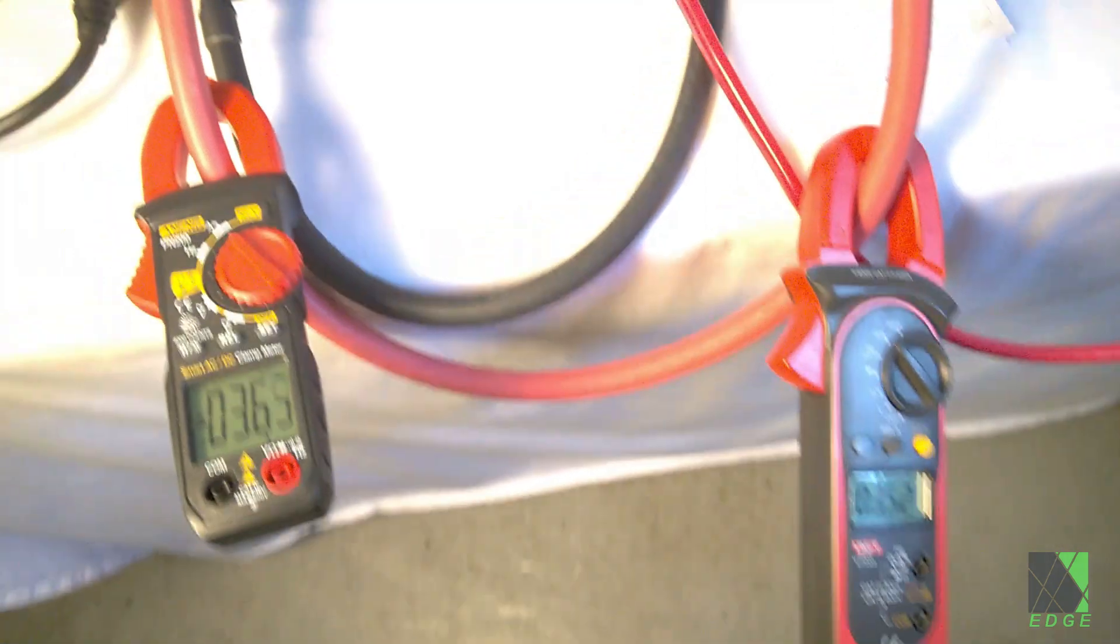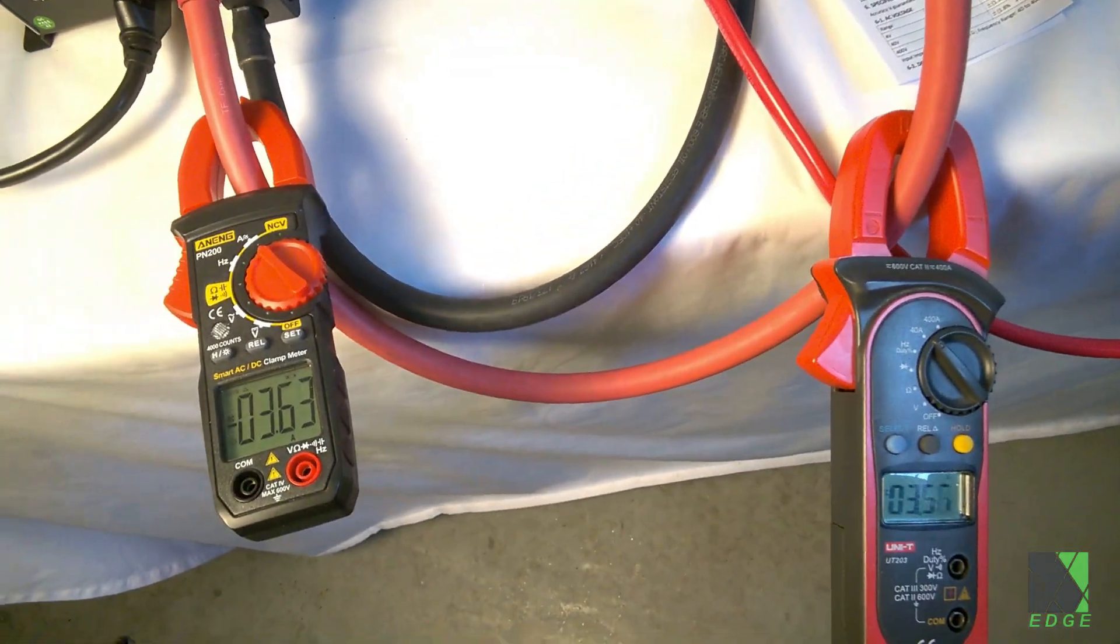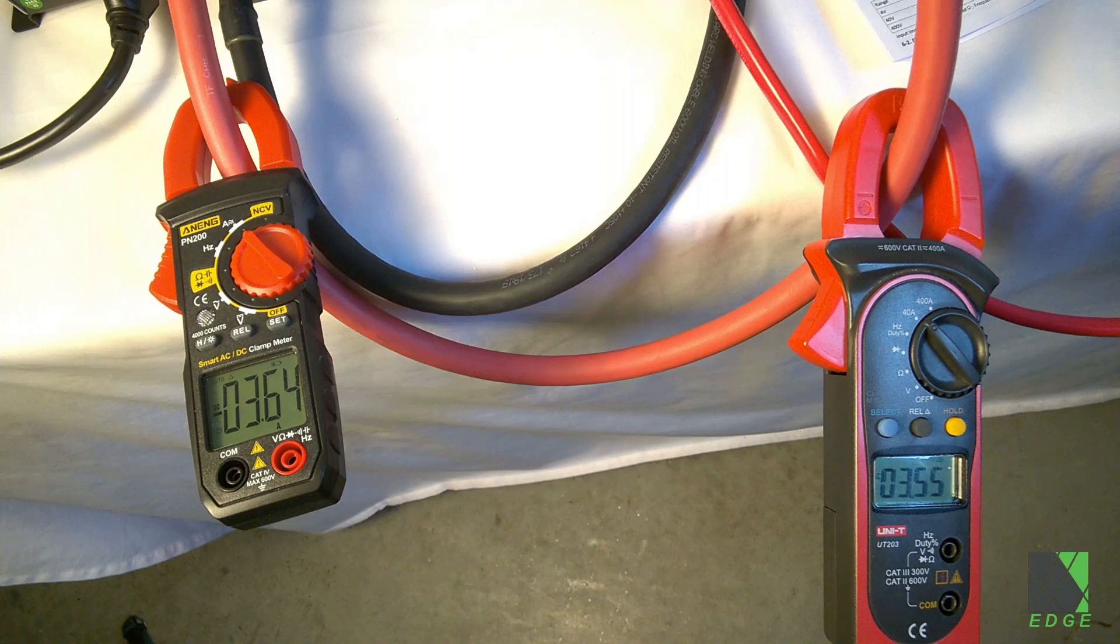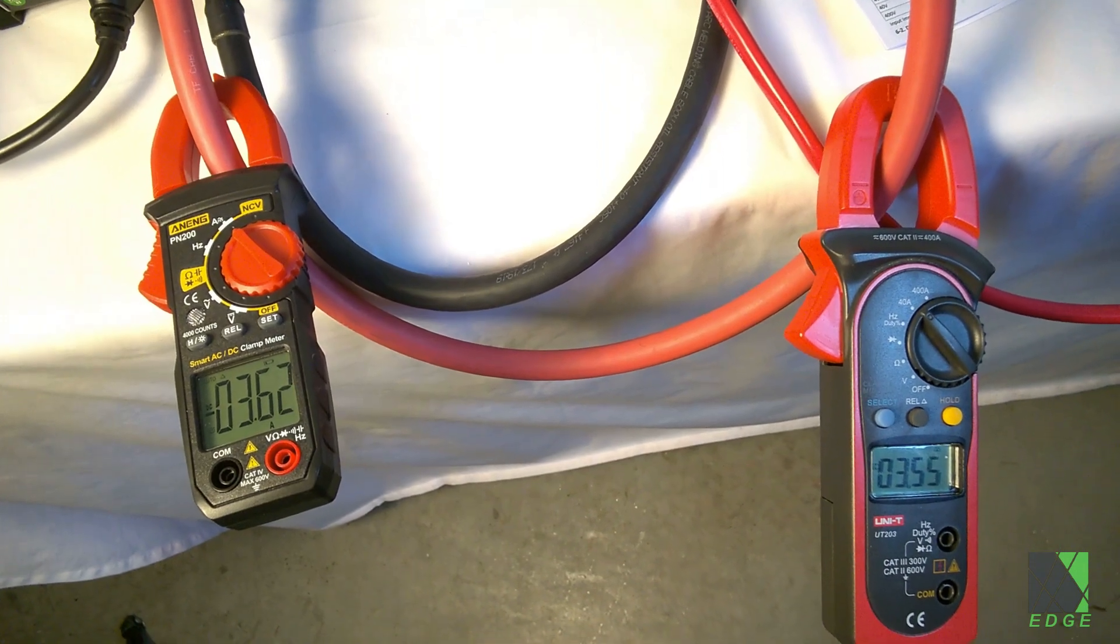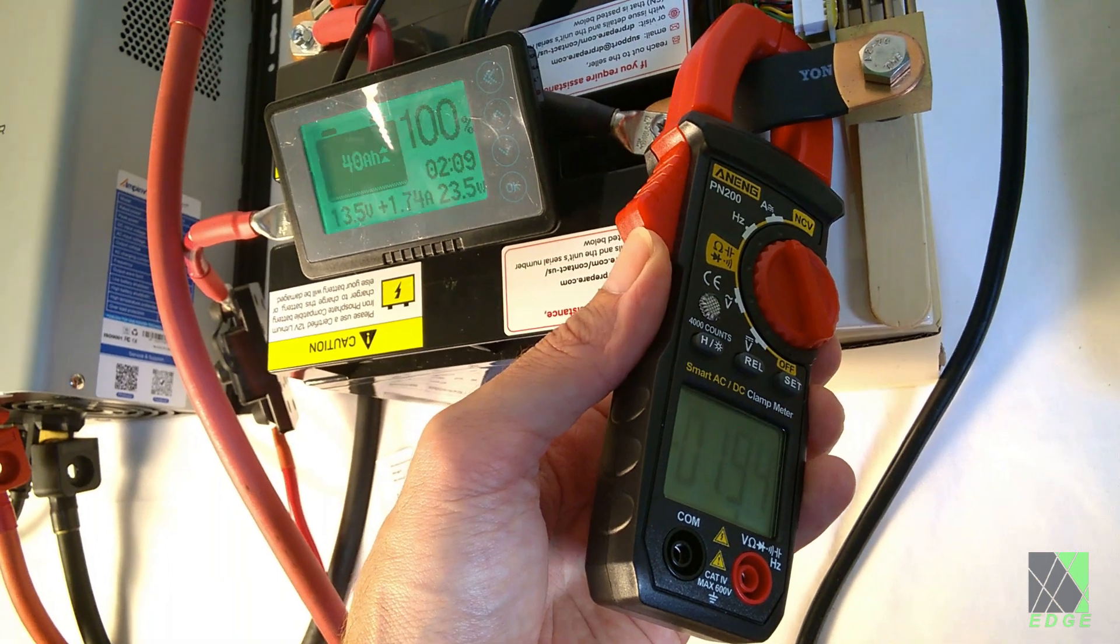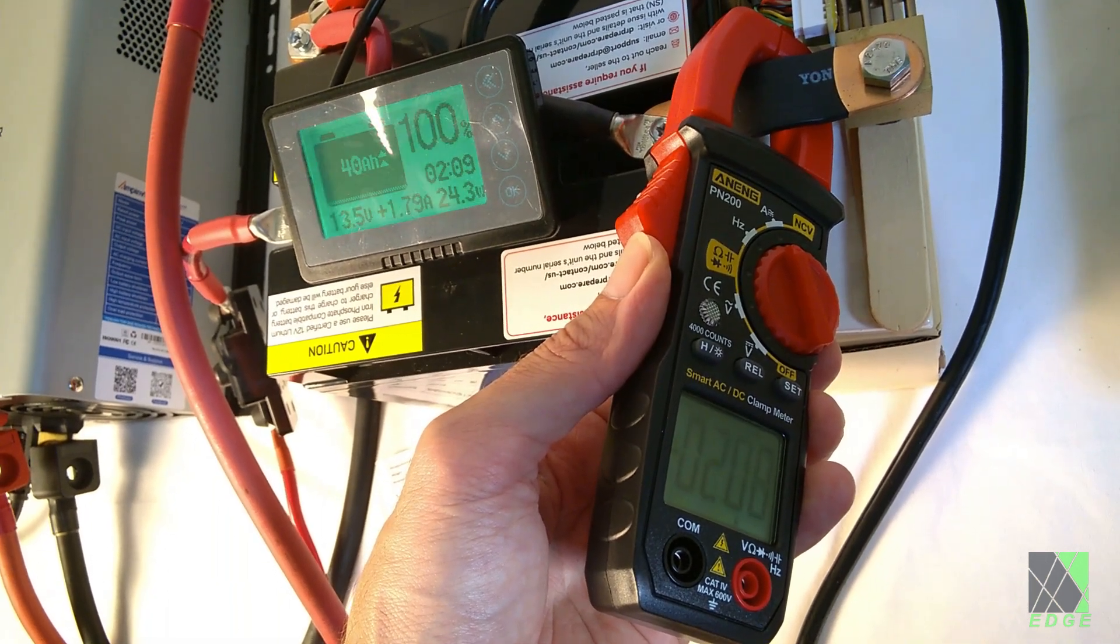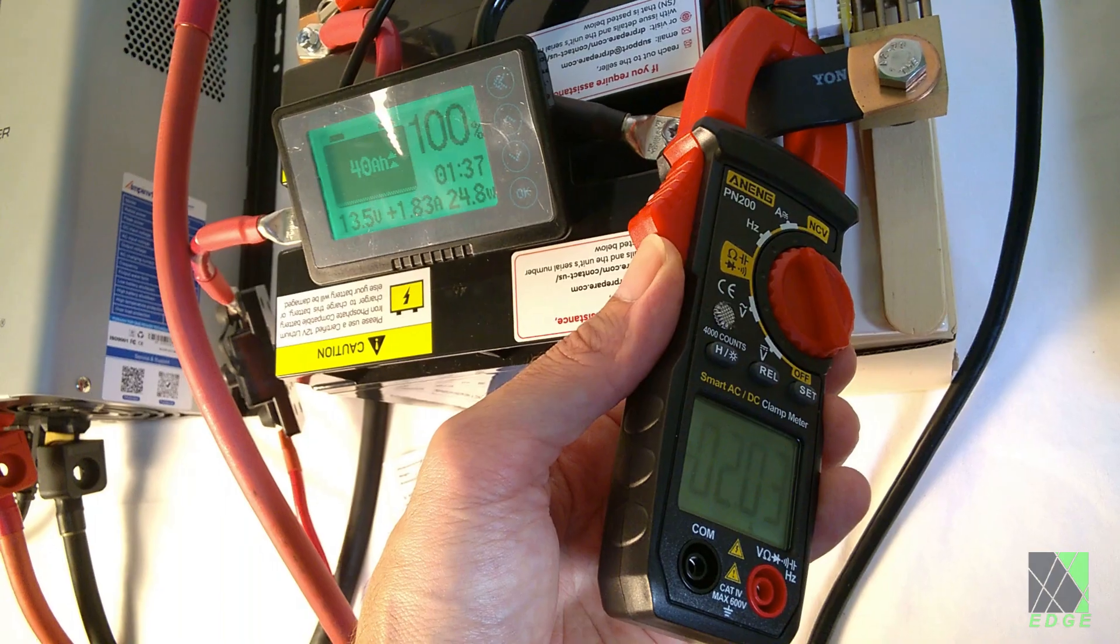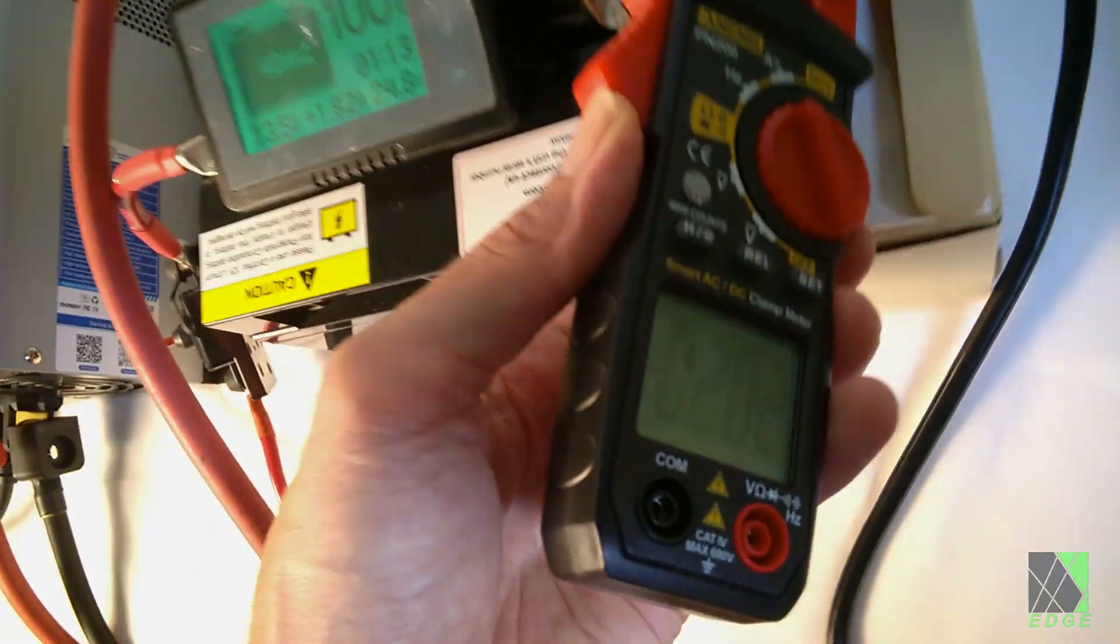Here I'm comparing the meter with two other amp meters, including a clamp-on meter as well as a coulomb counting amp meter with a shunt. As you can see, the readings are really quite close. A clamp-on or inductive amp meter is never going to be as accurate as a shunt-based meter, but it's very close and that makes it useful for all kinds of work.